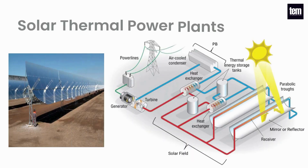Solar thermal power plants produce electricity by converting the solar radiation into high-temperature heat using mirrors and reflectors. The collectors are referred to as the solar field. This energy is used to heat a working fluid like water and gas. Then the heat energy is converted into mechanical energy in the turbine, and finally into electrical energy by means of a conventional generator coupled to the turbine.